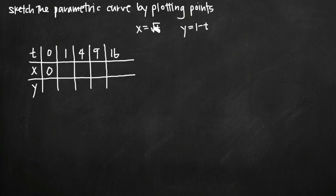When we plug 1 in for t into this equation for x, we'll get the square root of 1, so that's just 1. When we plug in 4, the square root of 4 is 2, the square root of 9 is 3, and the square root of 16 is 4.